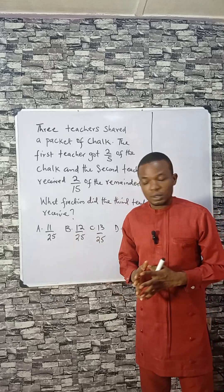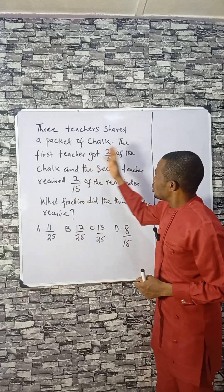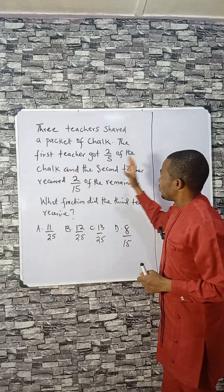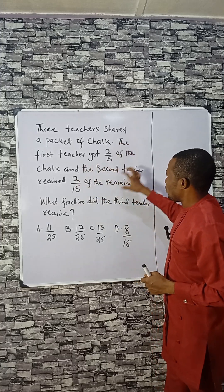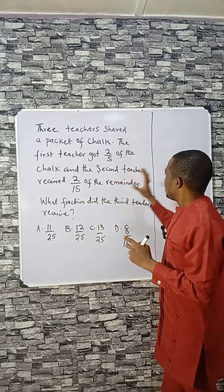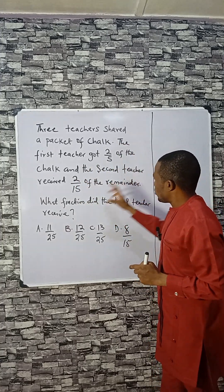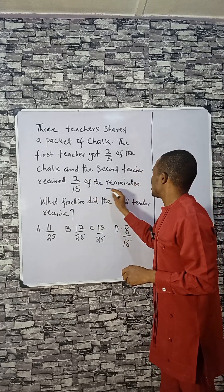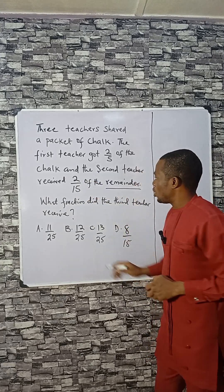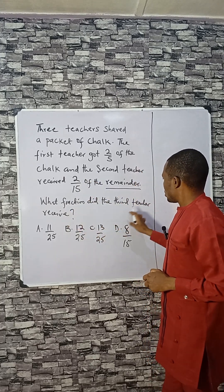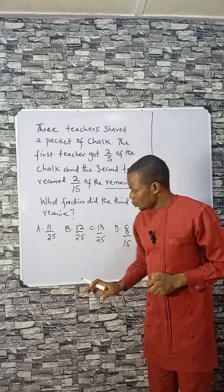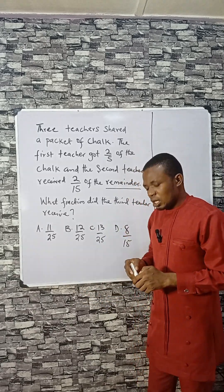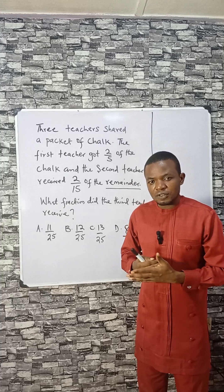Let's solve this problem. Three teachers shared a packet of chalk. The first teacher got 2/5 of the chalk. The second teacher received 2/15 of the remainder. What fraction did the third teacher receive?